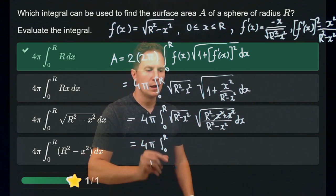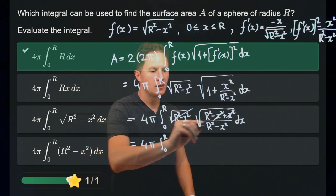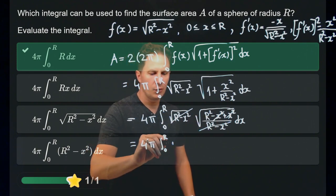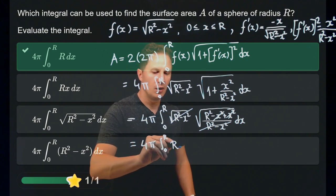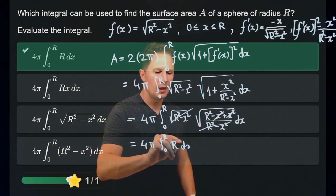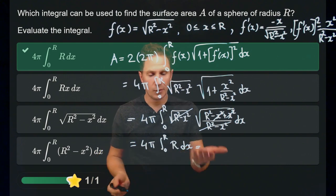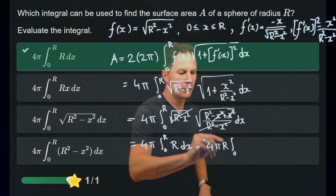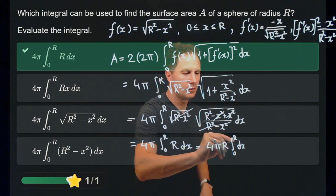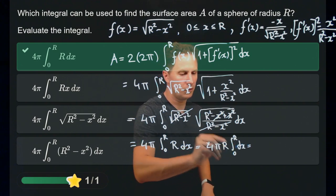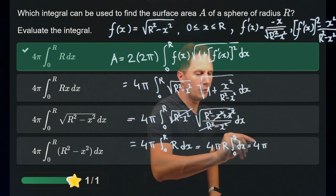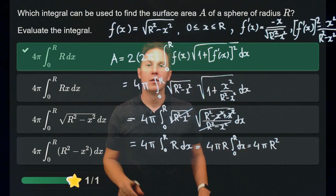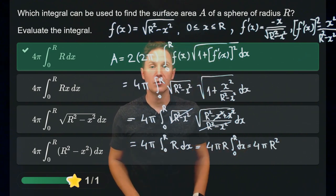More importantly, the square root of r² − x² cancels as well, and we are left with the integral of r with respect to x. Evaluating that is just 4πr times the integral from 0 to r dx, which is just r. So the previous factor of r gives us 4πr², as expected for the surface area of a sphere of radius r.